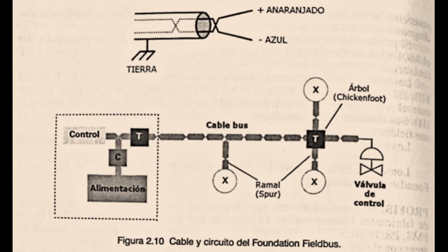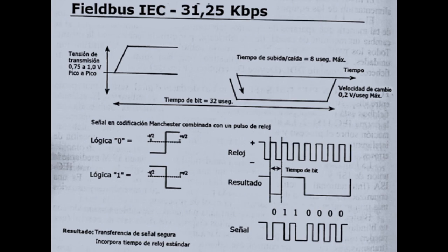To reduce signal reflections, a terminator matches the cable impedance, and the conventional power conditioner for the fieldbus wiring separates the conventional power supply from the fieldbus wiring. The signal transmitted at the physical level is encoded by the Manchester technique, and the digital data is sent over the fieldbus with a current of plus 10 mA at 31.25 kbps, creating a transmission voltage of 0.75 to 1 volt peak to peak.